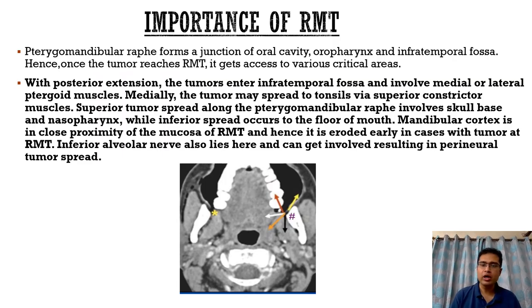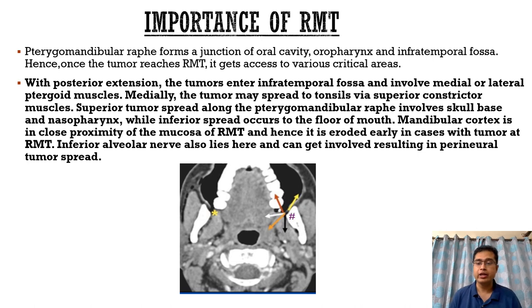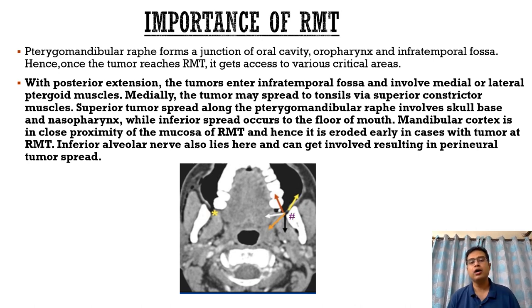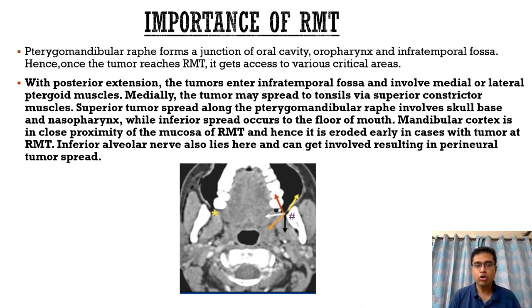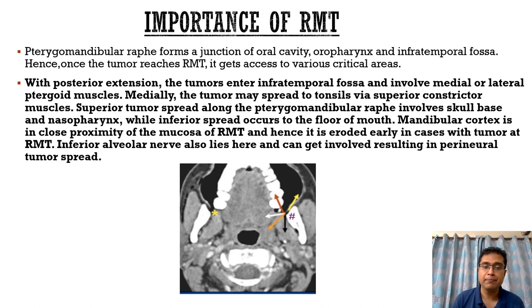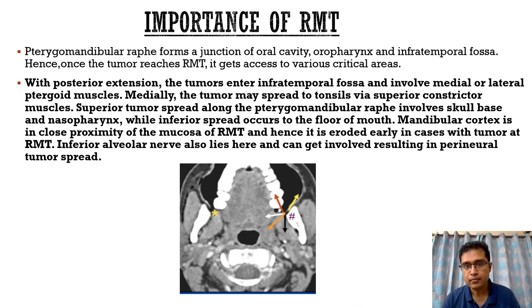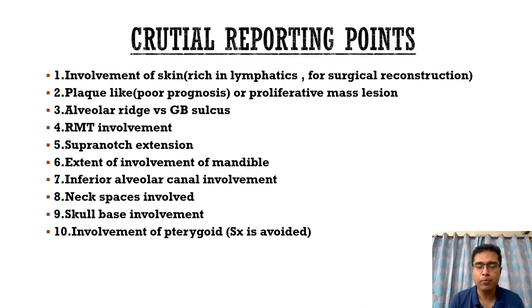The pterygomandibular raphe forms a junction of the oral cavity, oropharynx, and infratemporal fossa. Once the tumor reaches the retromolar trigone, it gets access to various critical areas. With posterior extension, the tumor enters the infratemporal fossa and involves the medial and lateral pterygoids — once pterygoid muscles are involved, the tumor becomes inoperable. Medially, the tumor may extend to involve the tonsils via the superior constrictor. Superior spread involves the skull base and nasopharynx; inferior spread occurs to the floor of the mouth. The mandibular cortex is in close proximity to the RMT mucosa and is eroded even in early cases, as was seen in our case. The inferior alveolar nerve also lies in close proximity, leading to perineural spread.